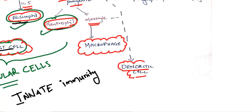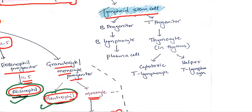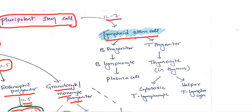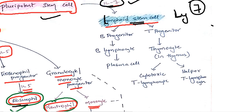Coming to our lymphoid stem cells: pluripotent stem cells, with the help of interleukin-7, give rise to lymphoid stem cells. If you write the letter L and reverse it, it will become 7 — that is how you can remember IL-7, interleukin-7.